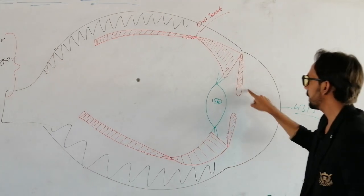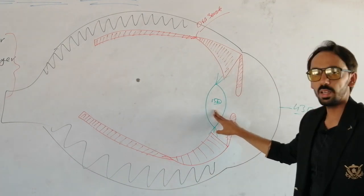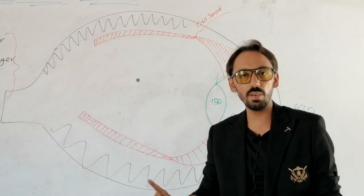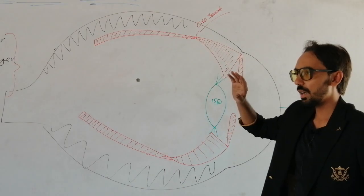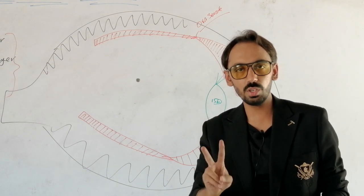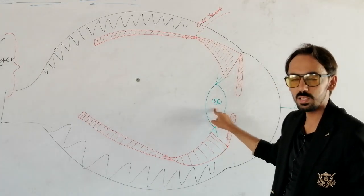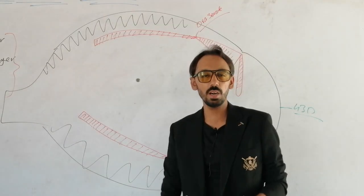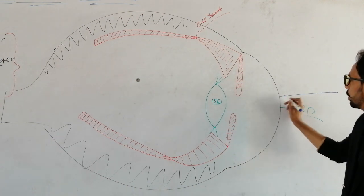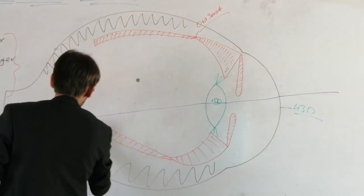The uveal tract has just three parts: iris, ciliary body, and choroid. These three structures have maximum vascularity. The crystalline lens does not have any type of blood vessels, vascularity, or pigmentation — it is a transparent structure, like the cornea. So we have two optical transparent structures: the cornea and the crystalline lens. Both bend light onto the sensitive layer of the retina.